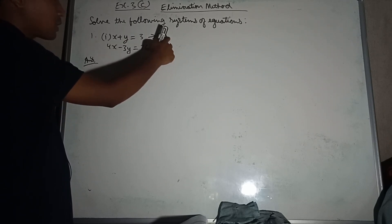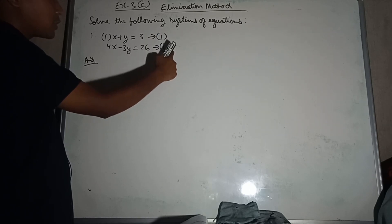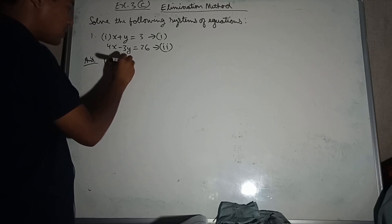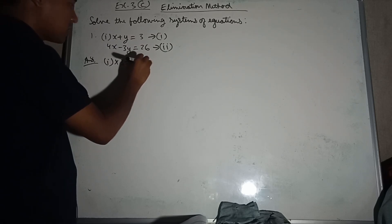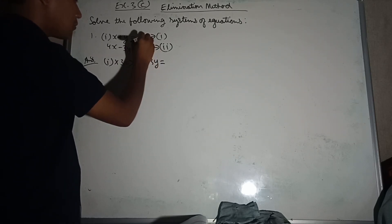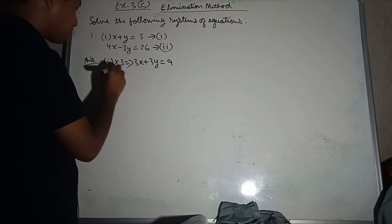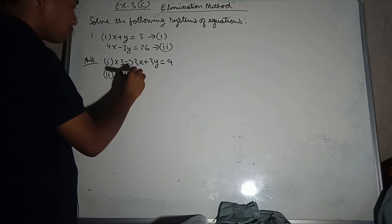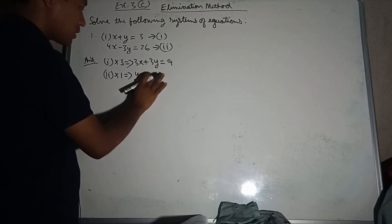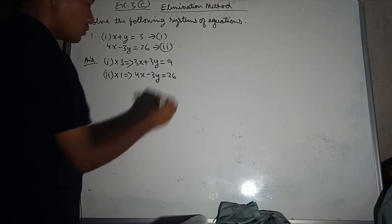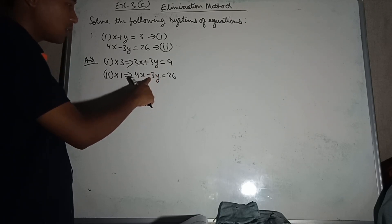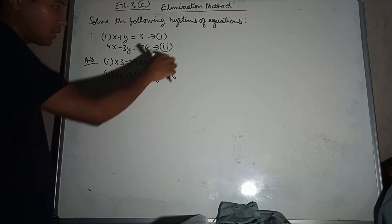Multiply equation 1 by 3 to get 3x plus 3y equal to 9. Keep equation 2 as 4x minus 3y equal to 26. Since the signs of 3y are plus and minus, we add the two equations to eliminate y.